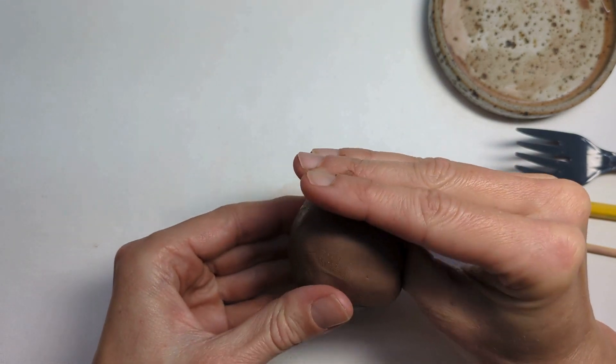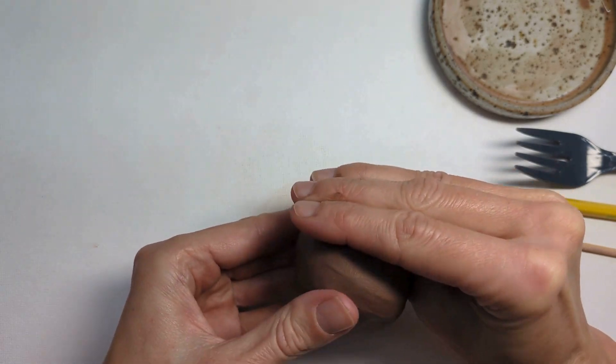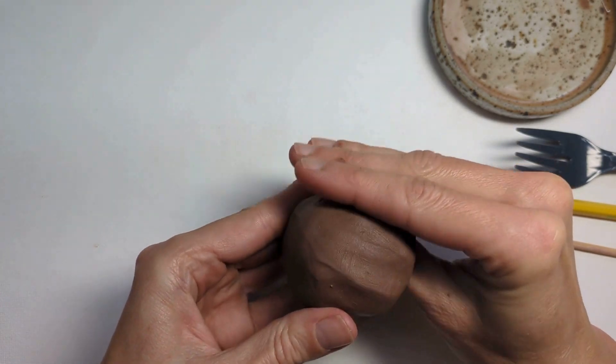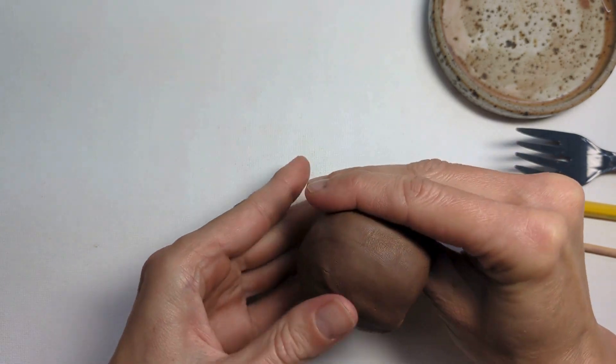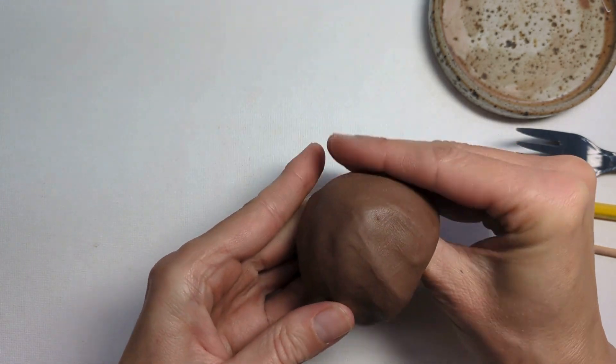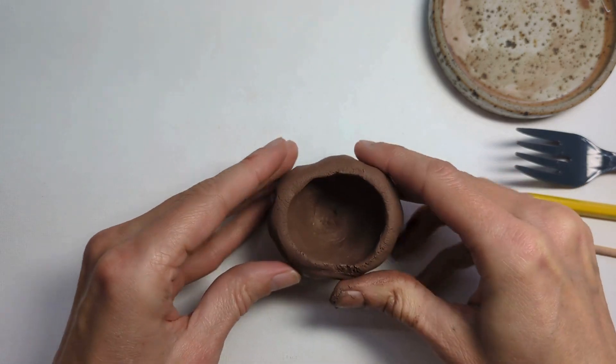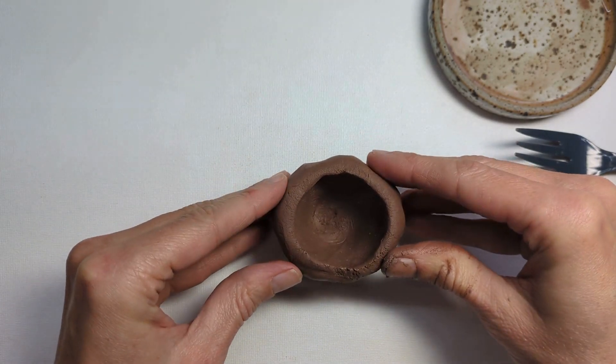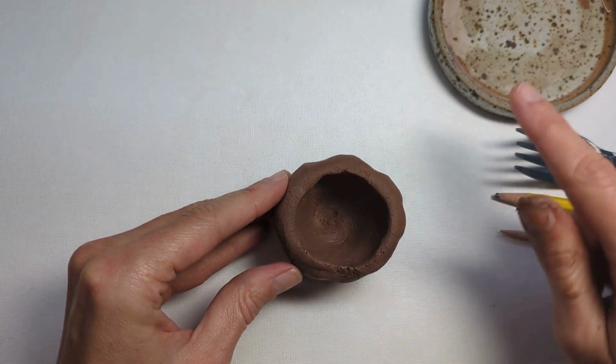That's why it's called a pinch pot, because I'm pinching the walls to make them thinner. I'm going to go around this a couple of times just until I feel the walls get a little bit thinner and the opening of the clay pot is going to get larger.